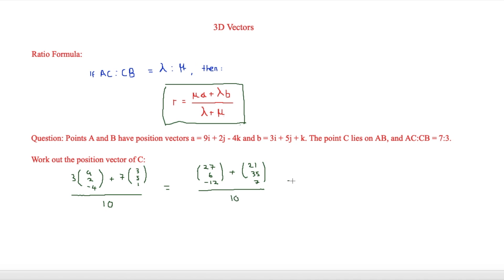So near the final step, now we just have to add everything up. So this means that we're going to get in one thing 48. Then we're going to get 41. And then we're going to get minus 5. And again, this is all over 10. So we basically have our final answer now.